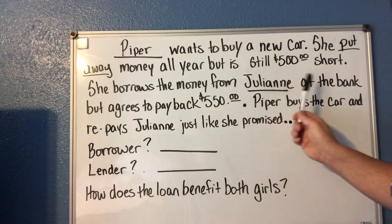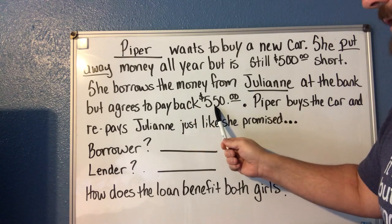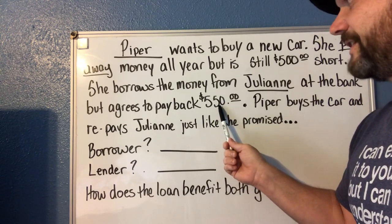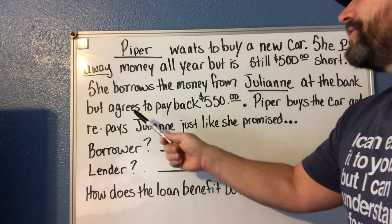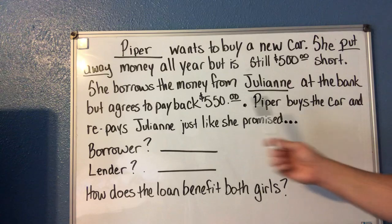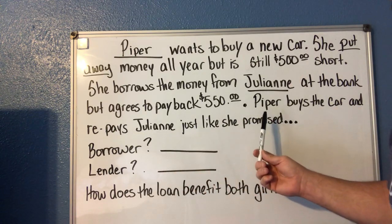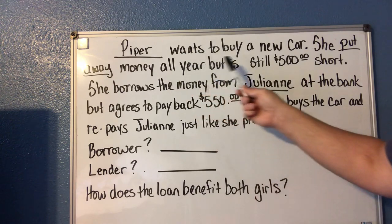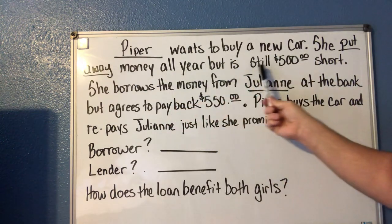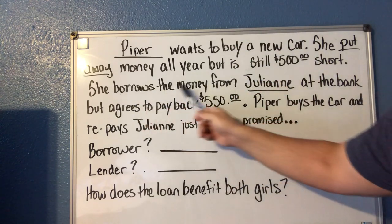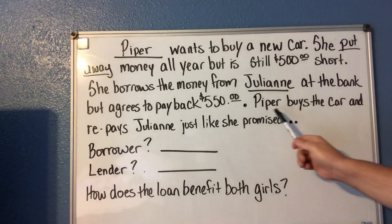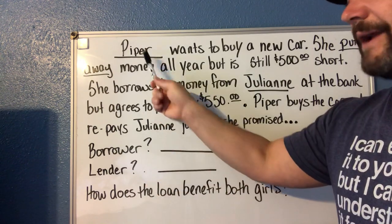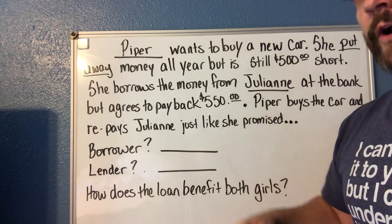Piper borrows the money from Julianne at the bank but agrees to pay back five hundred and fifty dollars. The car is on sale a hundred dollars off, so she's still saving fifty dollars even after paying back the fifty dollars in interest. Piper buys the car and repays Julianne just like she promised. So who is the borrower? That's right — that would be Piper. And who is the lender? The person who gave out the money and expects it back? That would be Julianne.